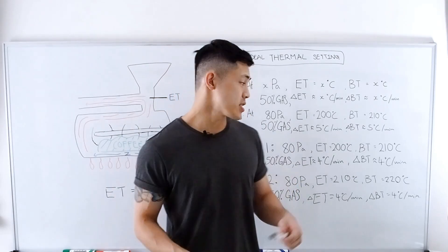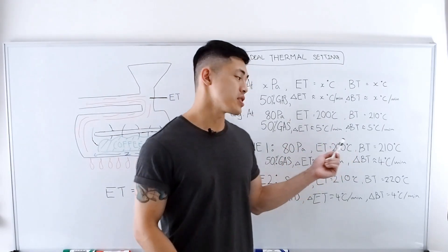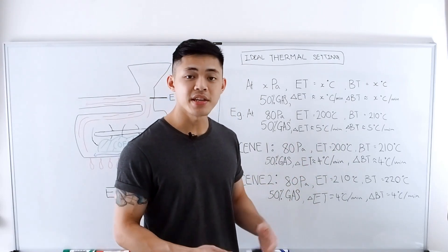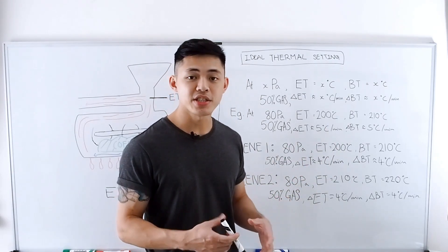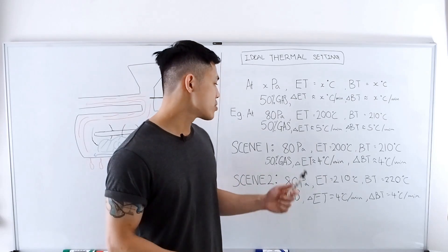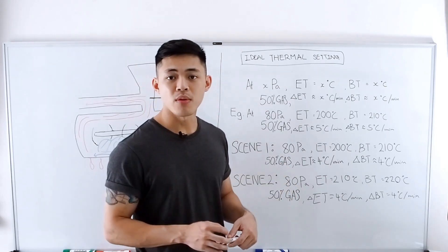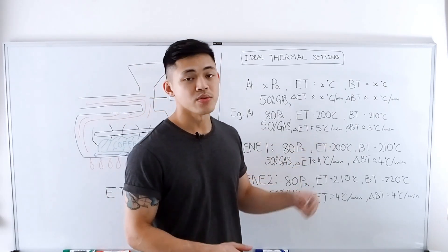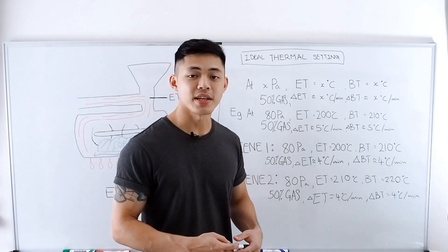If you go past your ideal thermal settings and you find that your delta ET or BT is higher than intended, it means there's more heat energy in your roaster, and you might want to turn off the gas just for a short while to bring it back down to your intended thermal settings.